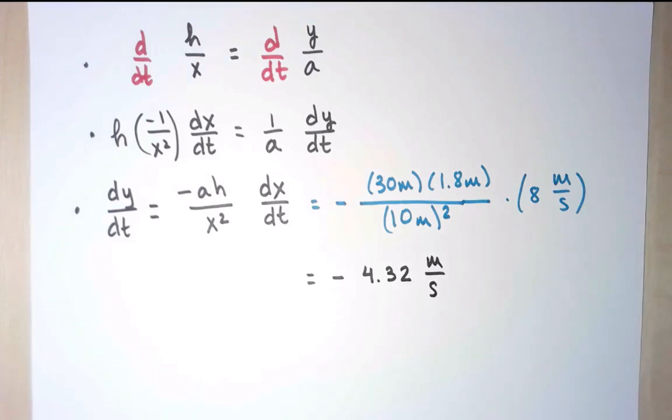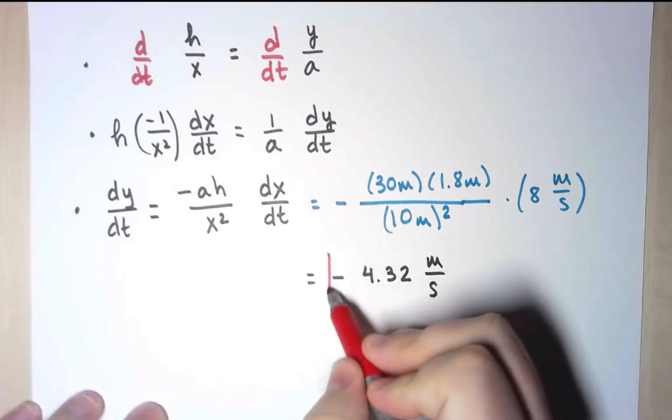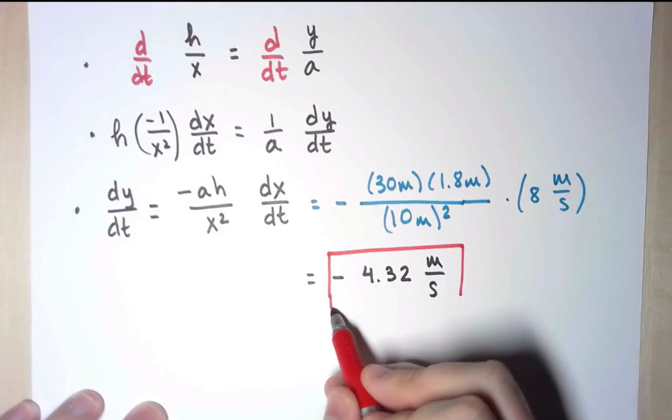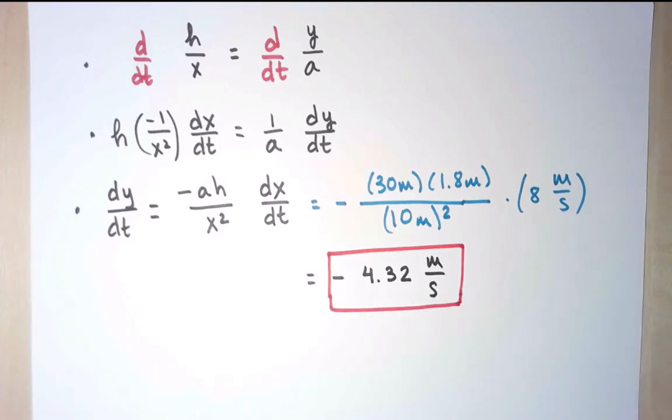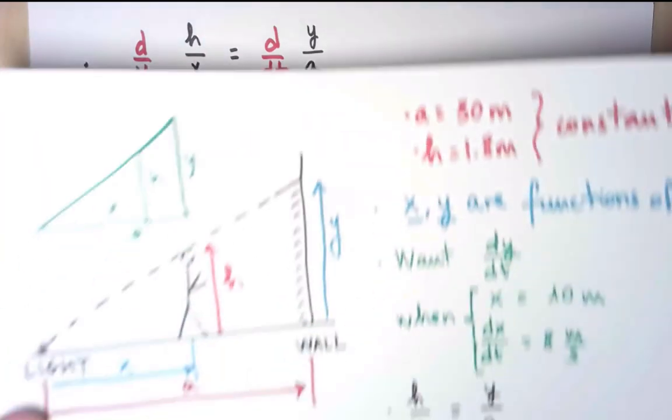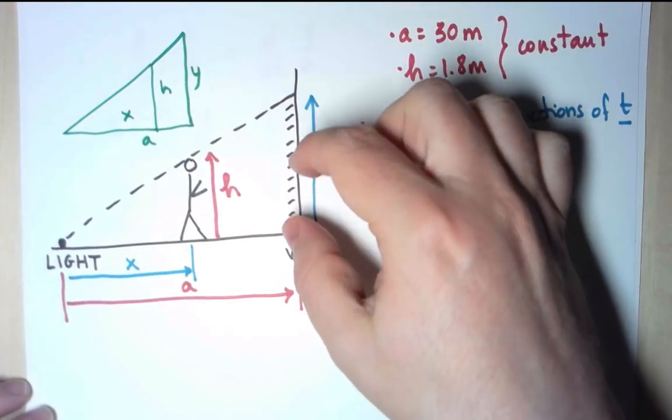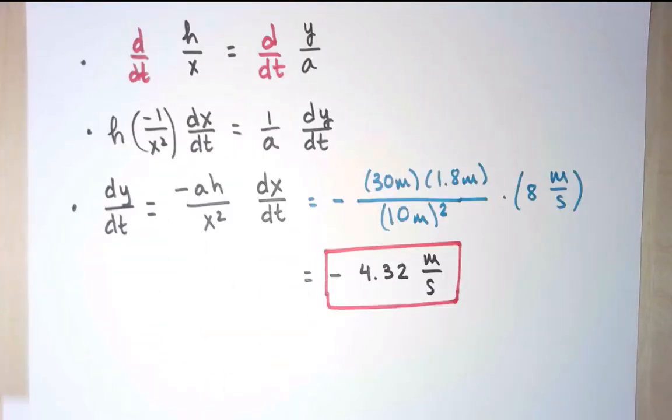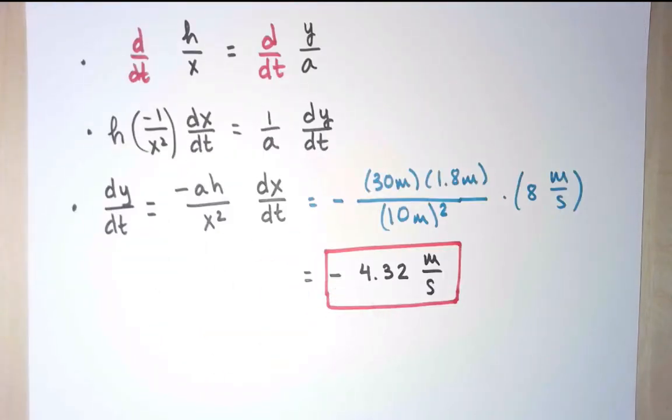This is my final answer. This is the rate of change of the height of the shadow on the wall with respect to time. Notice that it is negative. That means that the height of the shadow is decreasing, as I had predicted. So I guess that is a good sign. Pun intended.